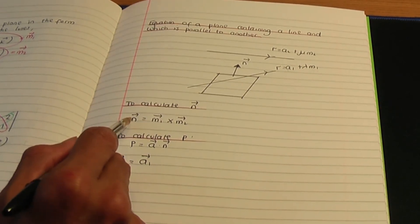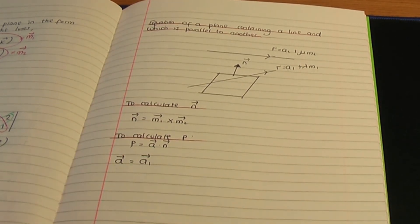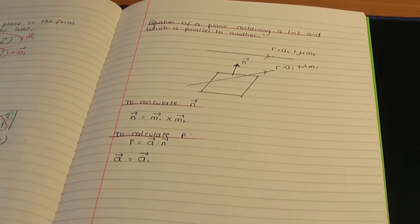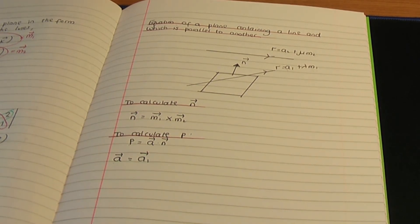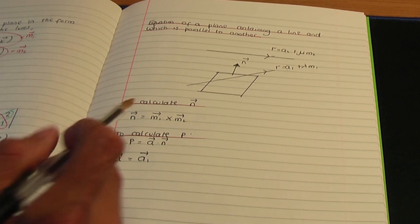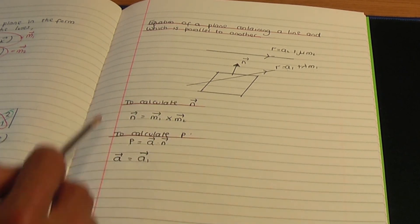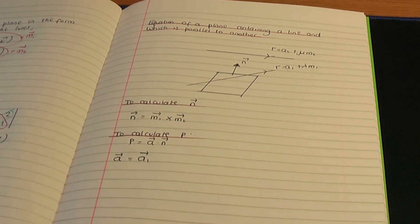That is how we'd work out the normal vector n for the plane. So that completes this video. I hope you found this video helpful. In the next video, I'll go through an example in order to show you how this works.